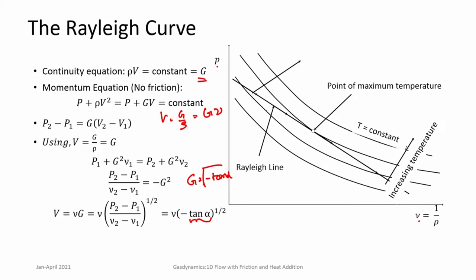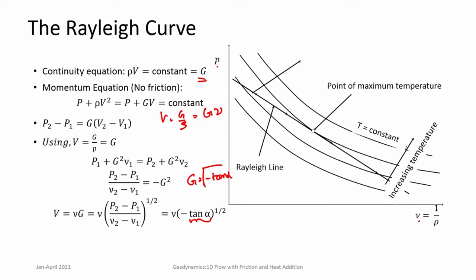You can draw isotherms and isentropes — curves of constant entropy and curves of constant temperature — along the same P-v plane. That will tell us how temperature and pressure change along these curves. Now they can also be plotted in an H-S or T-S diagram. Similar to Fanno curves, these curves also have two branches — an upper branch and a lower branch.